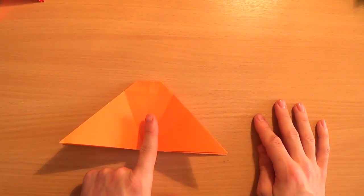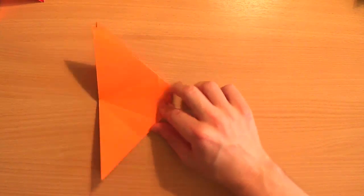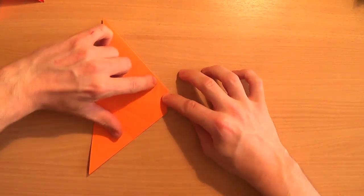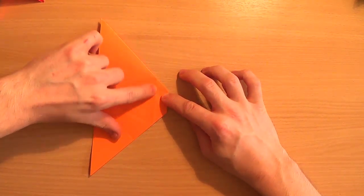That, believe it or not, was the easy fold. Now, let's do the hard fold. We put it to right angles. This line here is going to become a valley fold.